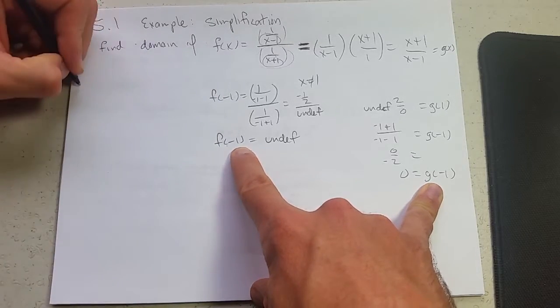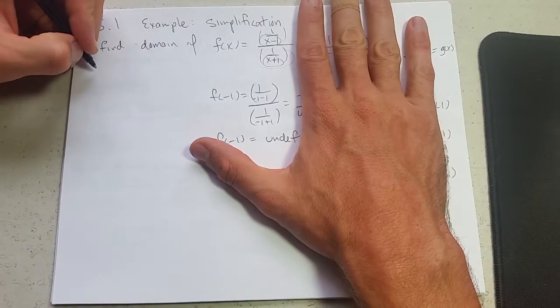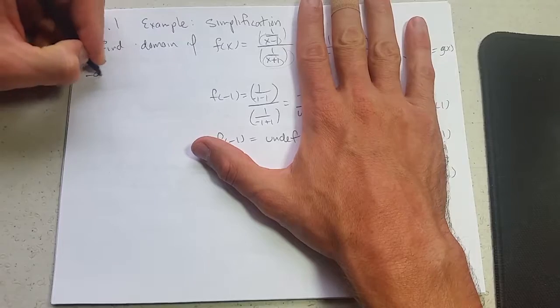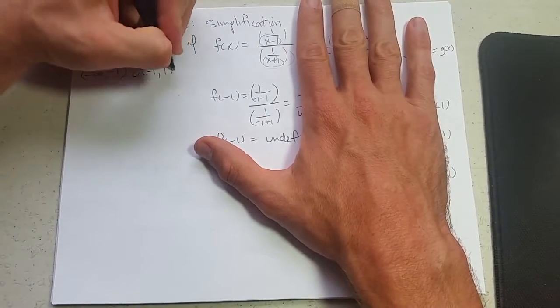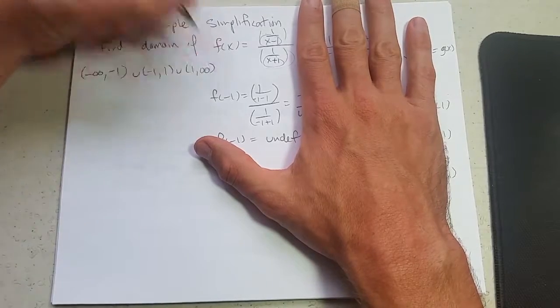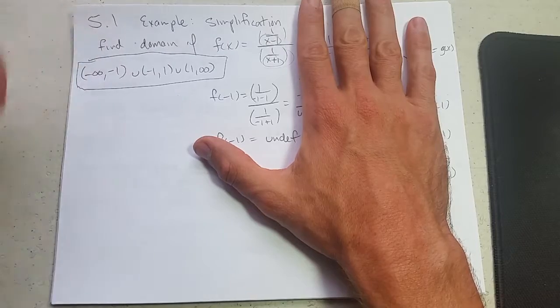So our answer for what is the domain of the original function: negative infinity to negative one, union negative one to positive one, union one to infinity. So this is the answer to what is the domain of f.